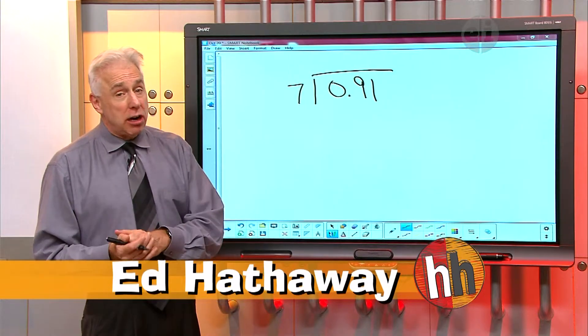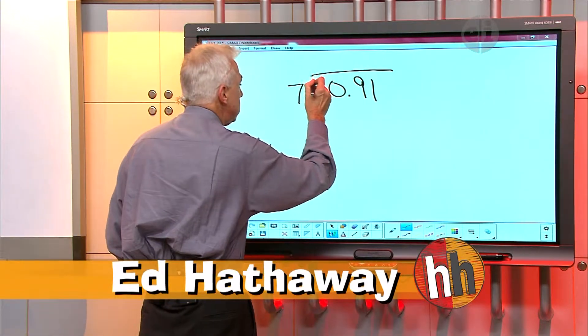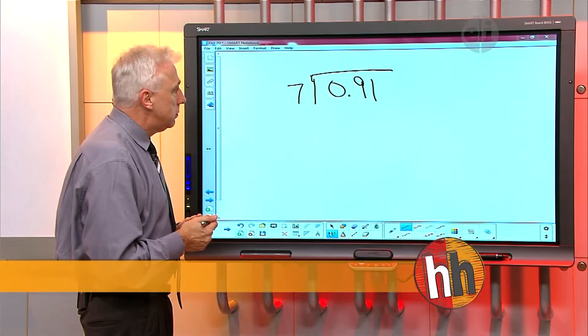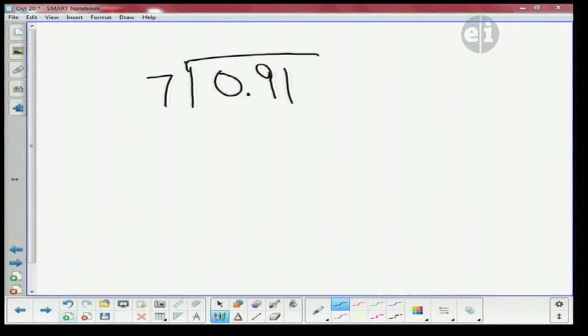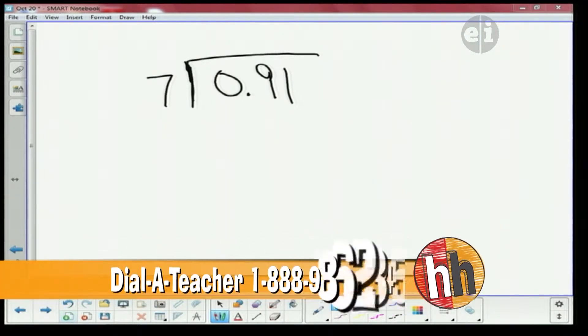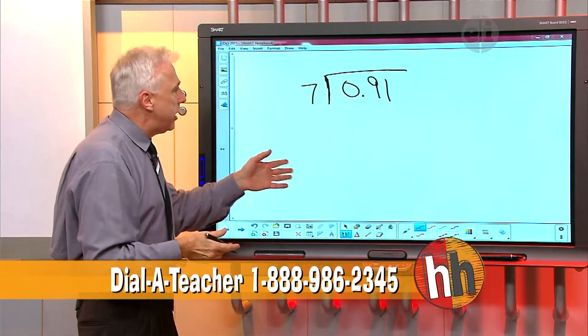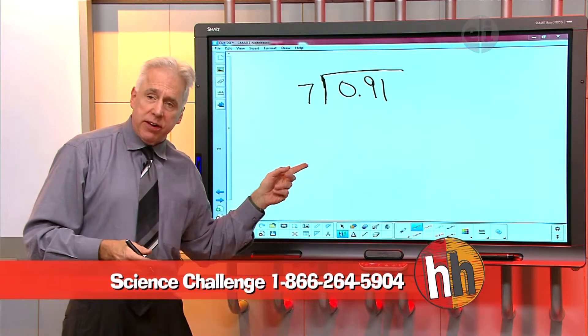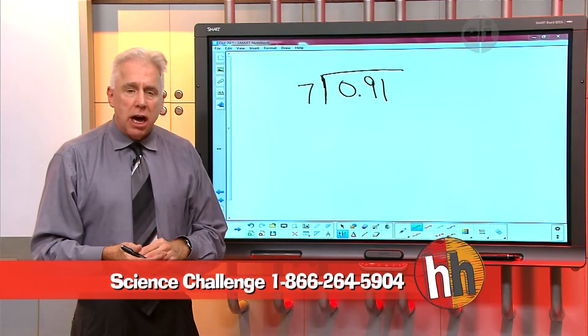Now, how would you start this? Well, I would start it by using the math division box. Okay. You're going to put it... Yeah, I got the 0.91 in the box. Is that what you're saying? Yes. Okay. So we got the 0.91 inside it. We got our divisor, the seven, outside the box.